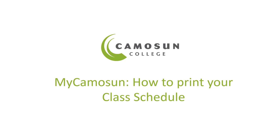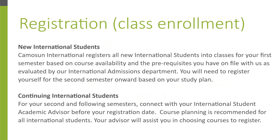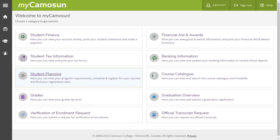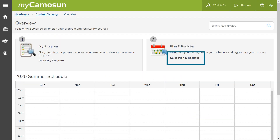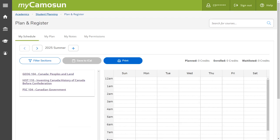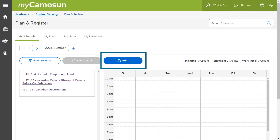This tutorial shows how to print your class schedule or save it as a PDF file. Once logged in Mycomosin, select Student Planning. On the Overview page, select Go to Plan and Register. On the Plan and Register page, make sure you are looking at the correct semester. Select Print to print your schedule or to save it as a PDF file.